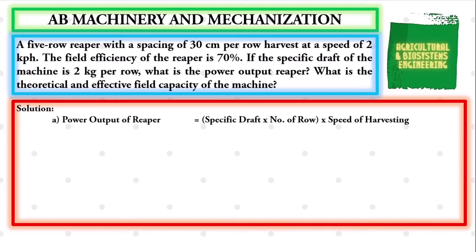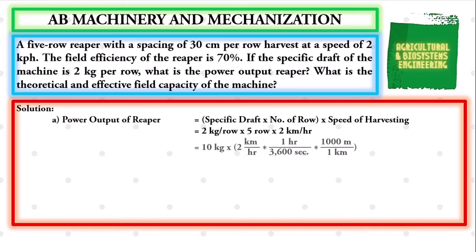We simply substitute values and we have: power output of reaper is equal to the product of specific draft of 2 kg per row, times the number of rows which is 5, multiplied by the speed of harvesting of 2 km per hour. We simply solve and we have 10 kg times 2 km per hour.